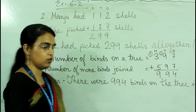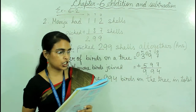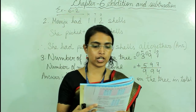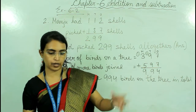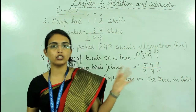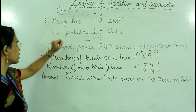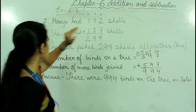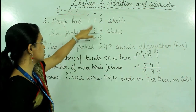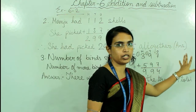Question number 2: Manchu had 112 shells which she picked up at the beach. She then picked up 187 more shells. How many shells had she picked altogether? Manchu had 112 shells and picked 187 more, so we add 112 plus 187. The answer is 299. Therefore she had picked 299 shells altogether.